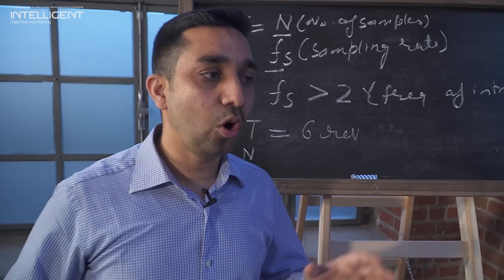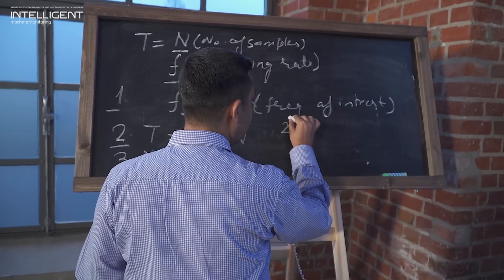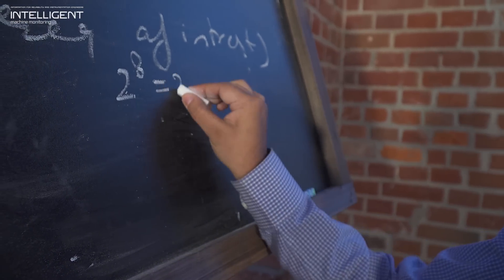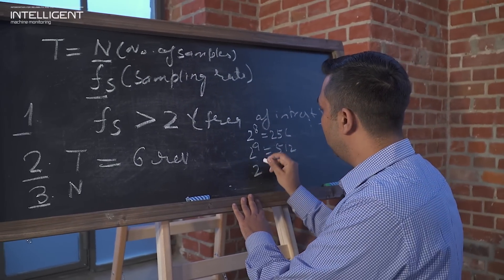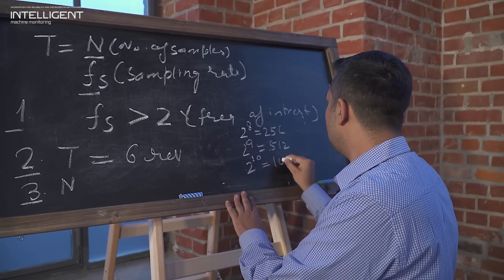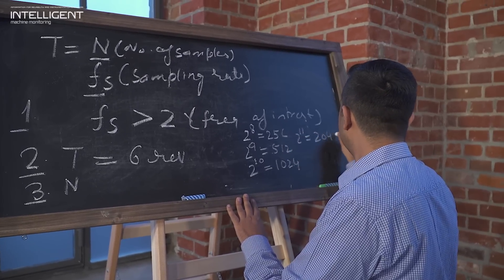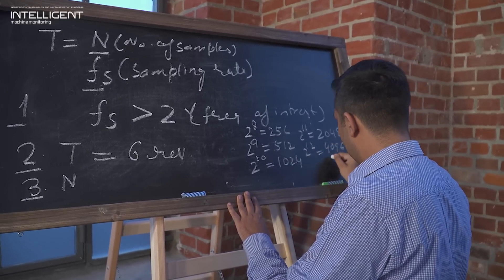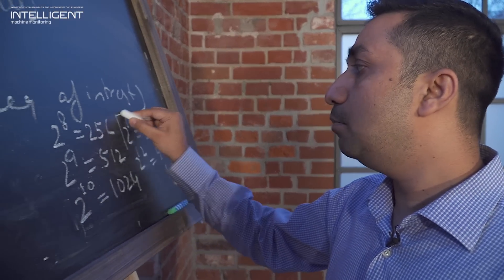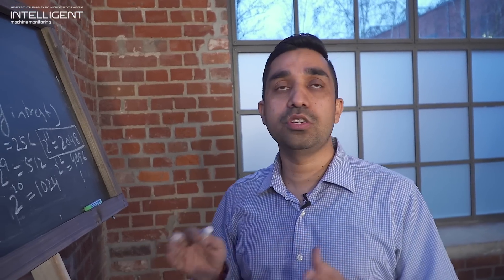And the third is for number of samples. Number of samples is always 2 to the power. Like for example, 2 to the power 8 is 256, 2 to the power 9 is 512, 2 to the power 10 is 1024, 2 to the power 11 is 2048, 2 to the power 12 is 4096, and so on. The rule says that you should capture minimum of 2048 samples. 4096 is better, but minimum you should capture 2048 samples.